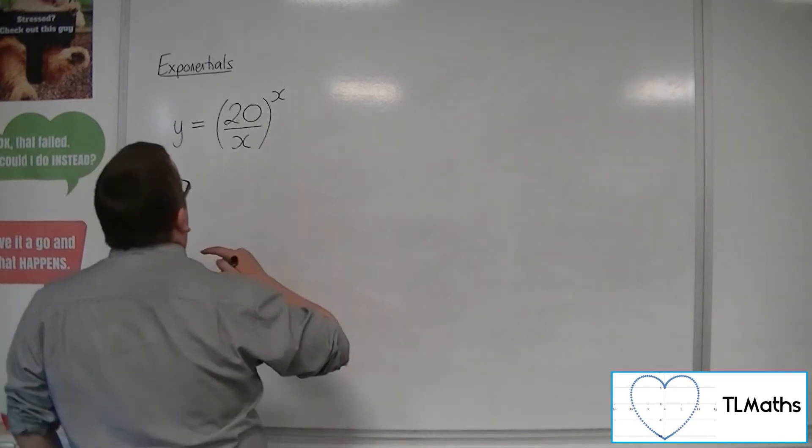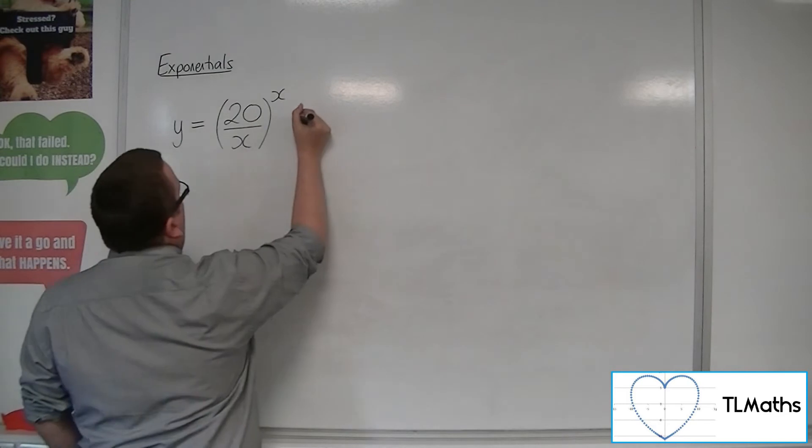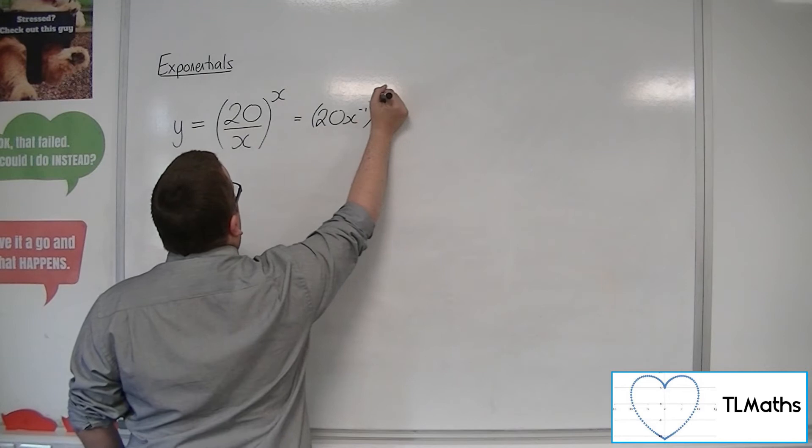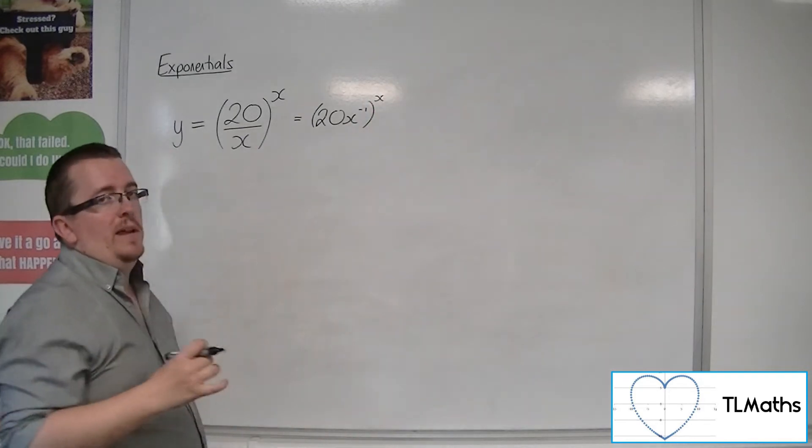Now before I differentiate it, what I'd like to do is just rewrite this as 20x to the minus 1 all to the power of x. That will make it a little bit easier for us.